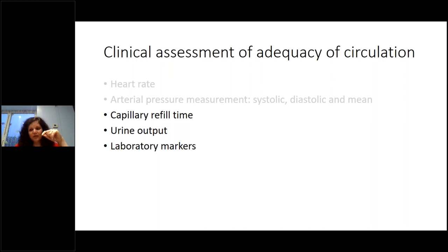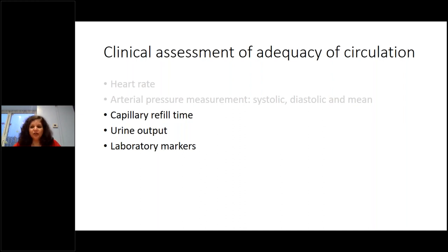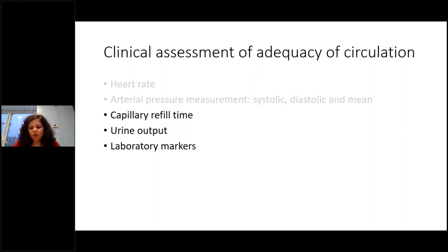When diastolic steel is affecting end organs, you need to act — either treat the duct or provide inotropic support to increase blood pressure. Always include lactate when doing a blood gas and presenting on ward rounds. Lactate is a surrogate marker of end-organ perfusion and should be combined with your cardiovascular assessment.